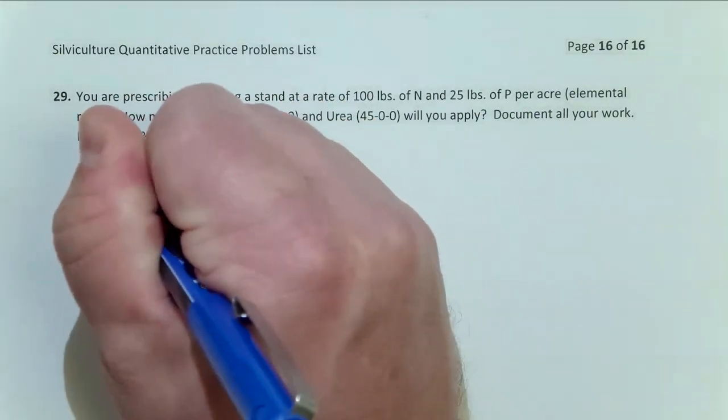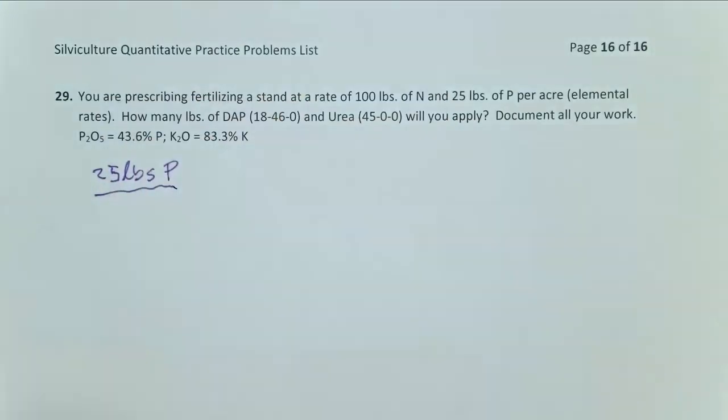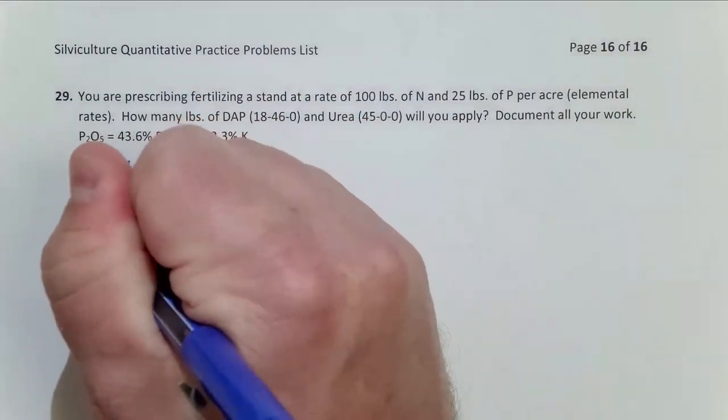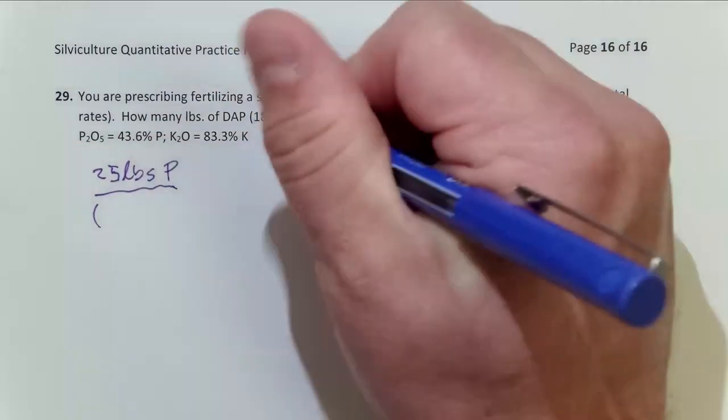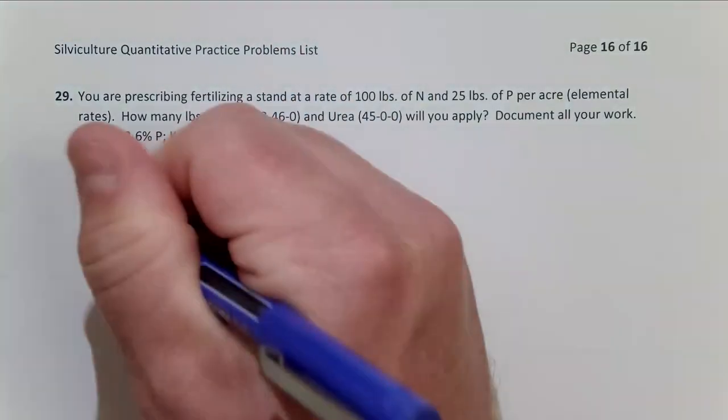So that's going to be 25 pounds of elemental P we need. And I know I'm going to need divided by my fertilizer is 46% P because remember this is NPK. So 0.46.